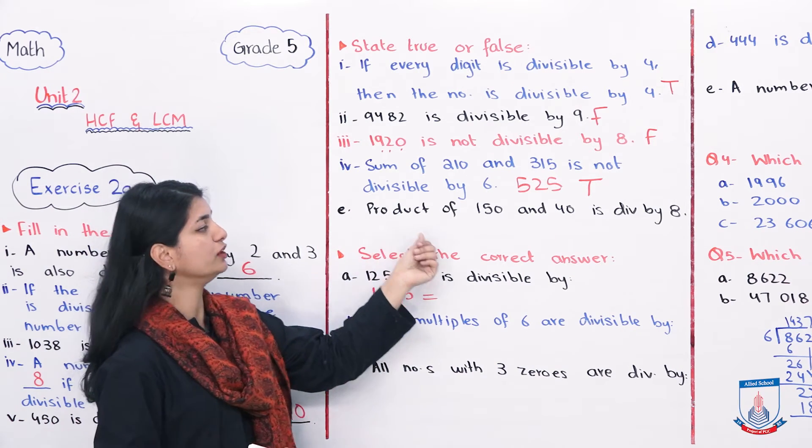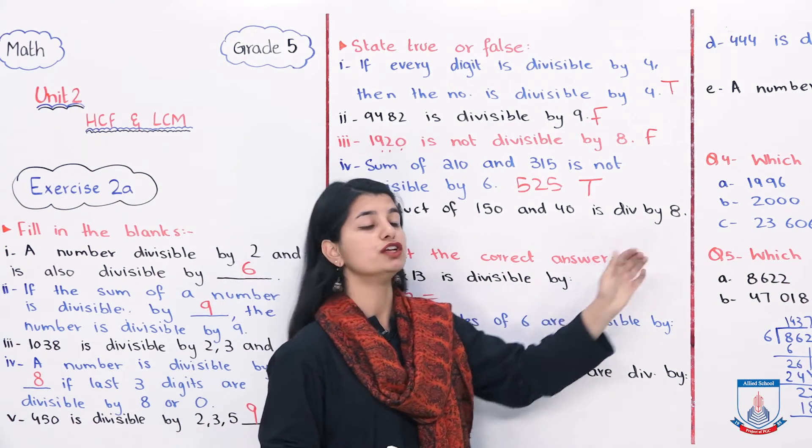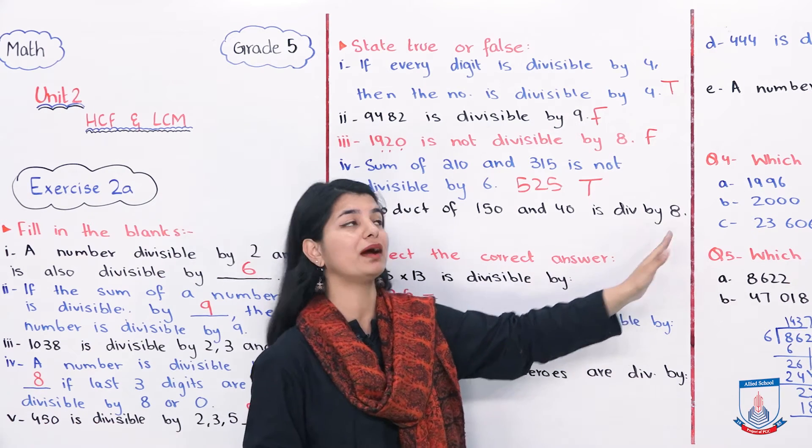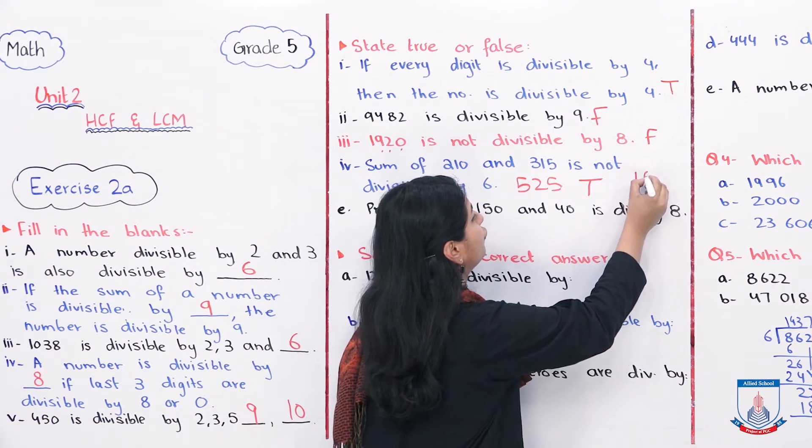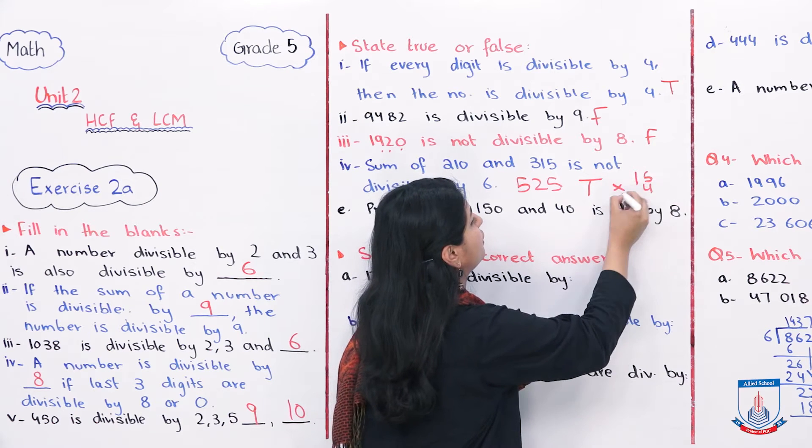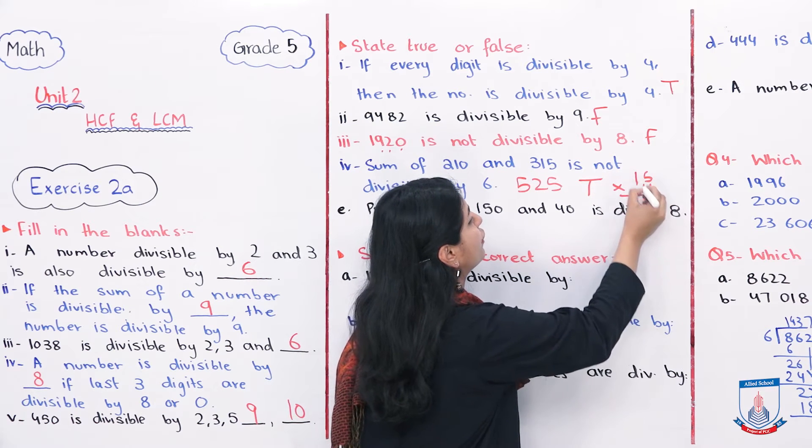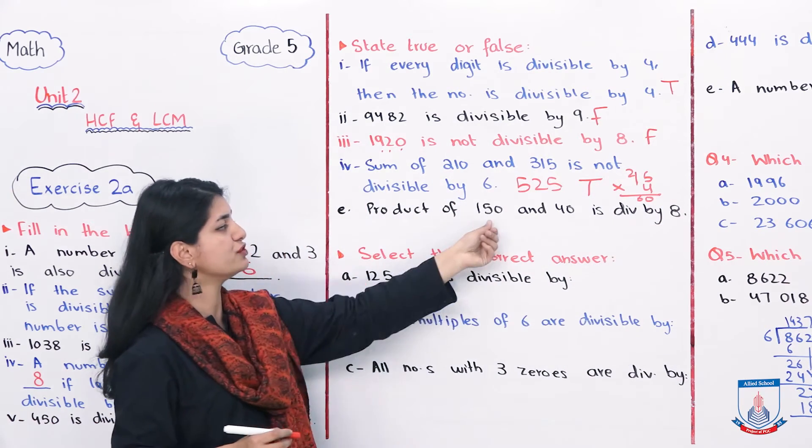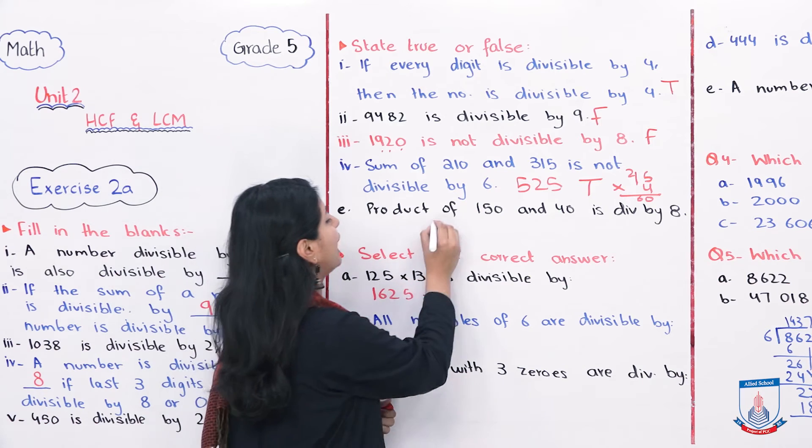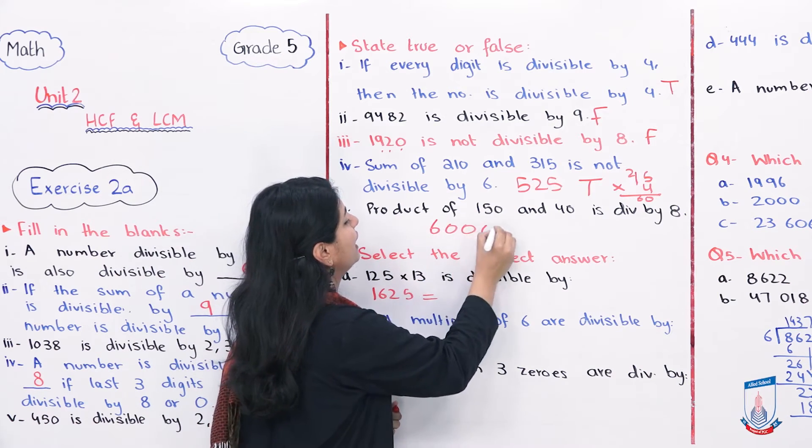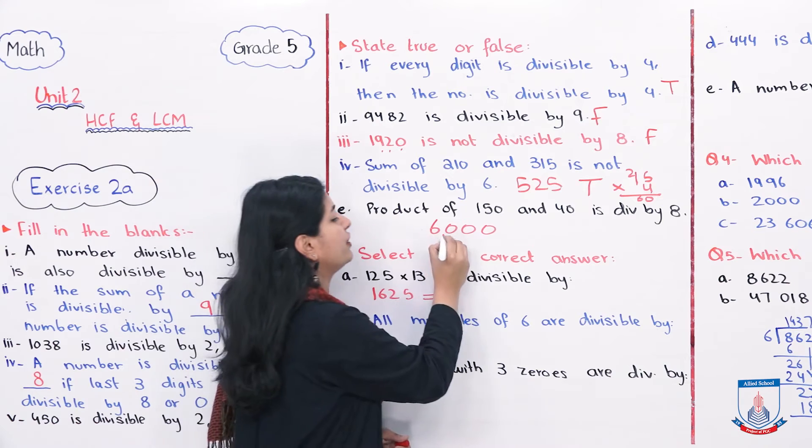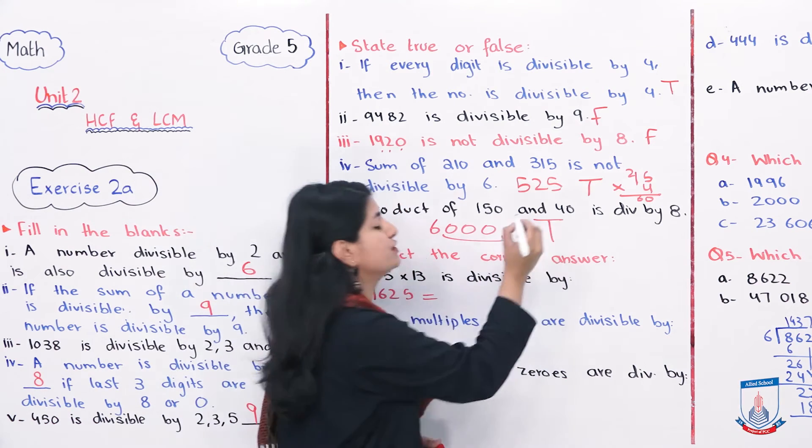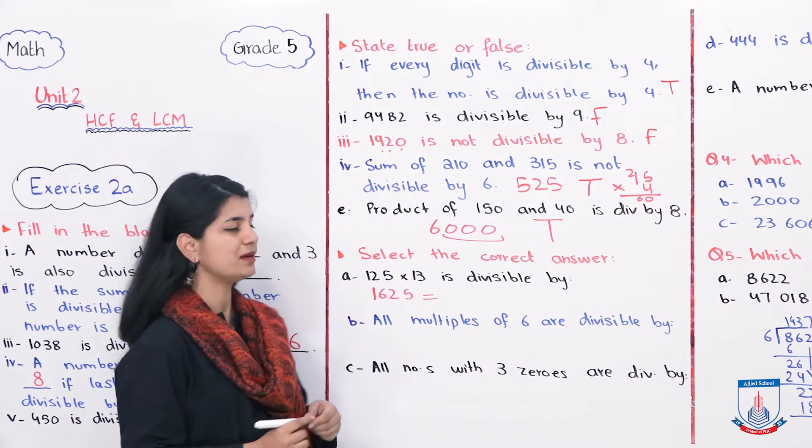Last part is: product of 150 and 40 is divisible by 8. So you have to multiply these and then you have to see if the answer is divisible by 8. You multiply 150 by 40, simply 15 into 4, 5 into 4 is 20, so our answer is 6000. With 6000, if we add the zeros properly, we will have this. And when we have this, it means it is divisible by 8. So this statement is true. You can write true in front of the last statement.